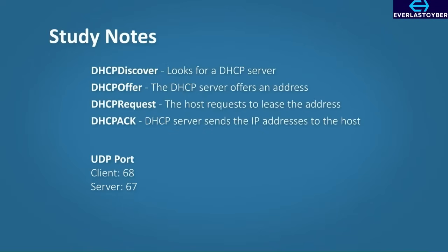As a recap, this is a general overview of how DHCP works. Different vendors and different DHCP settings and scenarios can slightly change these specifics, but the overall concept remains the same. The four steps: DHCP Discover looks for a DHCP server. DHCP Offer — the DHCP server offers an address to the host. DHCP Request — the host requests to lease that address. DHCP Acknowledgement — the DHCP server sends the IP address to the host. DHCP uses UDP ports — the client will use port 68 and the server will use port 67.